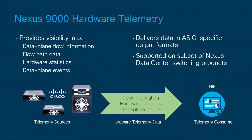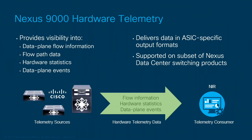Hardware telemetry depends on specific platforms — the Nexus 9K Cloud Scale ASICs, EX, FX, FX2, and our upcoming GX. There are actually multiple different mechanisms used in the hardware to collect various data from the data plane. This shows you data plane flow information — the path a particular host-to-host conversation occurred on — and metadata about that path: overall path latency, whether any drops were encountered, whether bursts occurred, hardware statistics, and data plane events.